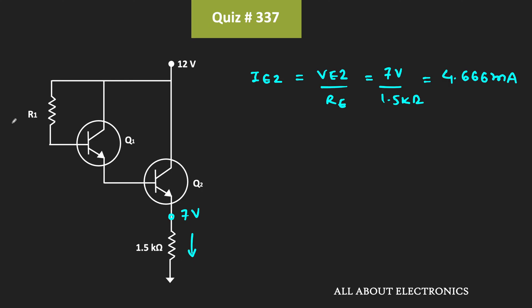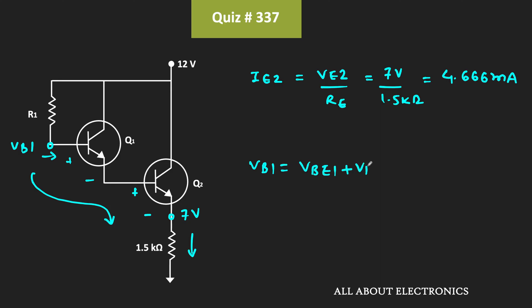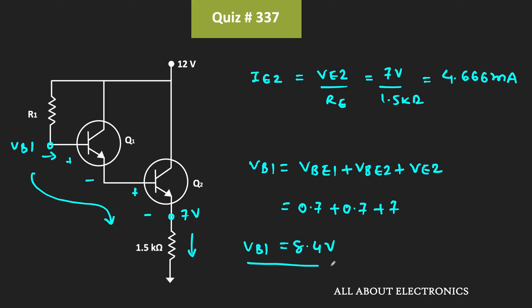To find R1, we need the base current IB1 and the voltage at node VB1. Since Vbe1 = Vbe2 = 0.7V, applying KVL around the loop gives VB1 = VBE1 + VBE2 + VE2 = 0.7V + 0.7V + 7V = 8.4V. So the voltage at node VB1 is 8.4V.